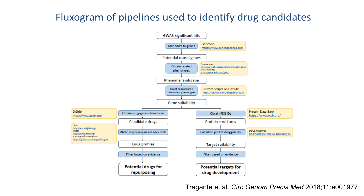This is a fluxogram of the pipelines developed in this study. The first pipeline can predict relevant side or discordant effects of targeting CAD and MI loci, identify drug-gene interactions using DGIDB, and filter the most suitable candidates for repurposing among existing drugs in the market. The second pipeline assesses the drugability of non-targeted loci associated with CAD and determines the safety of targeting these gene products, similar to the first pipeline, to suggest novel targets for drug development.